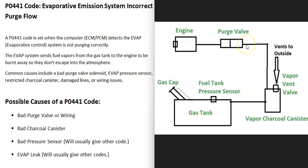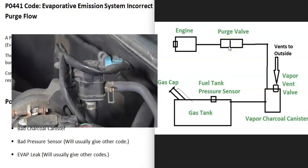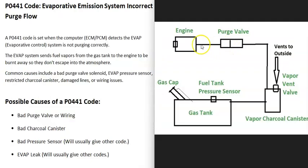The gas vapors leave the charcoal canister and go through a hose up into the engine compartment, where there's what's called a purge valve. The purge valve stays closed when the engine's not running. When the engine is running and warms up, the computer sends it a signal to open, and the gas vapors go into the engine to be burnt away. That's a basic overview of the EVAP system.